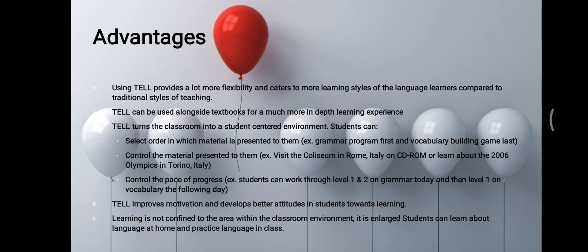TEL turns the classroom into a student-centered environment. For example, students can select the order in which material is presented to them, so students can choose which one becomes their priority and which one is less priority. Students control the material presented to them so they can decide which is easier and which is harder to set aside first. Then, students can control the pace of progress.